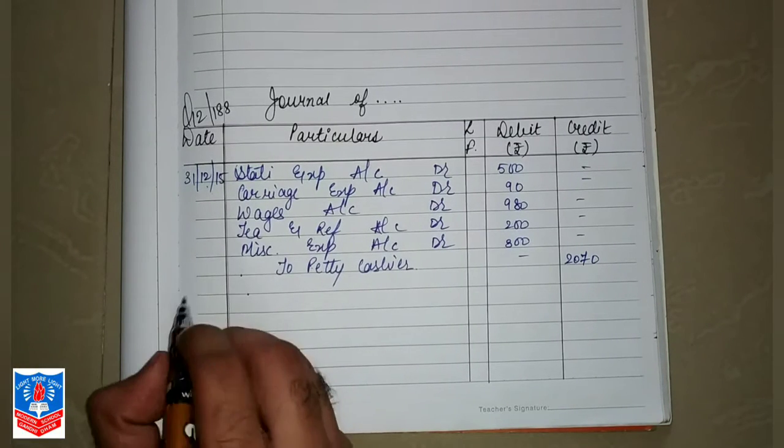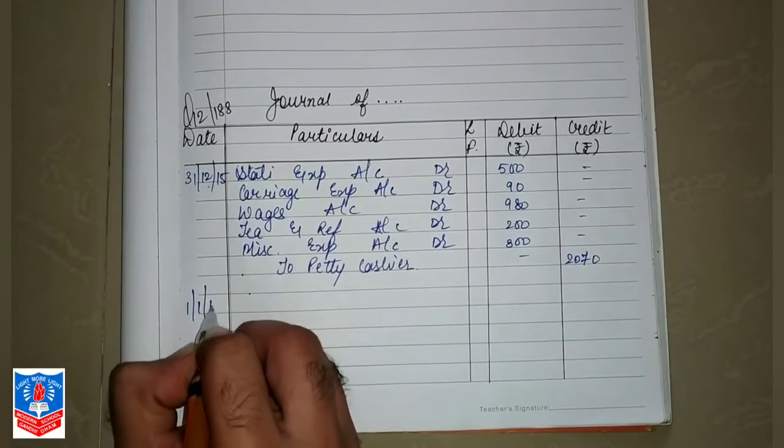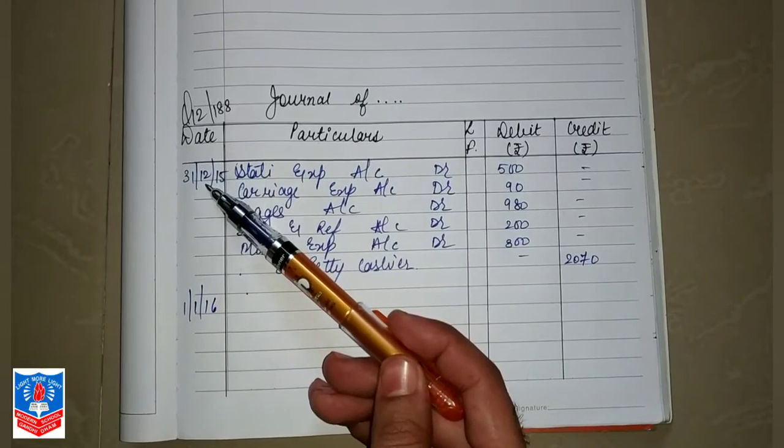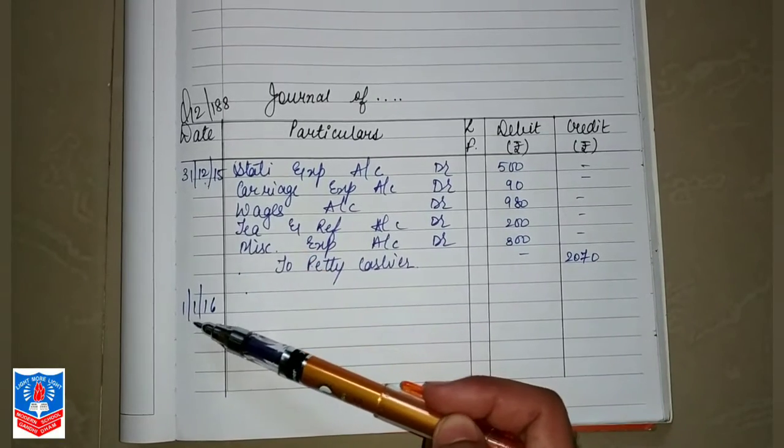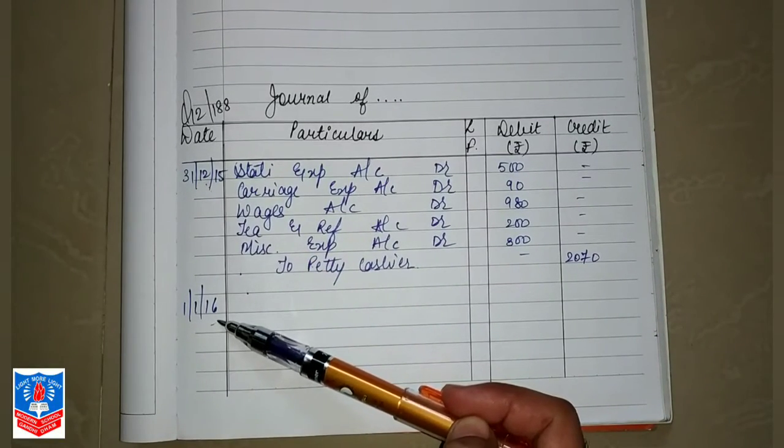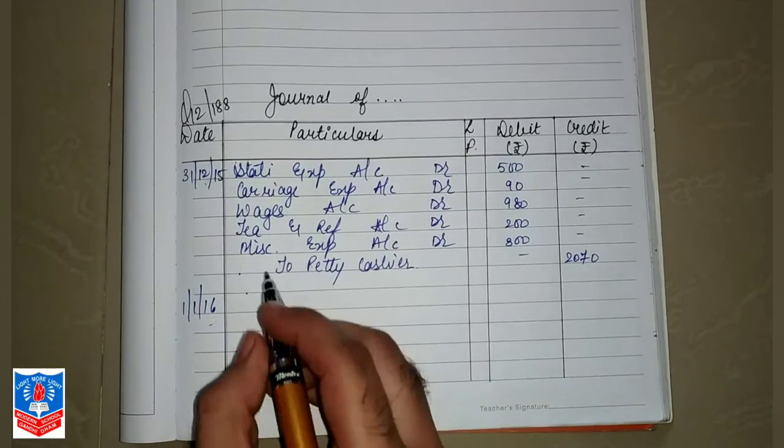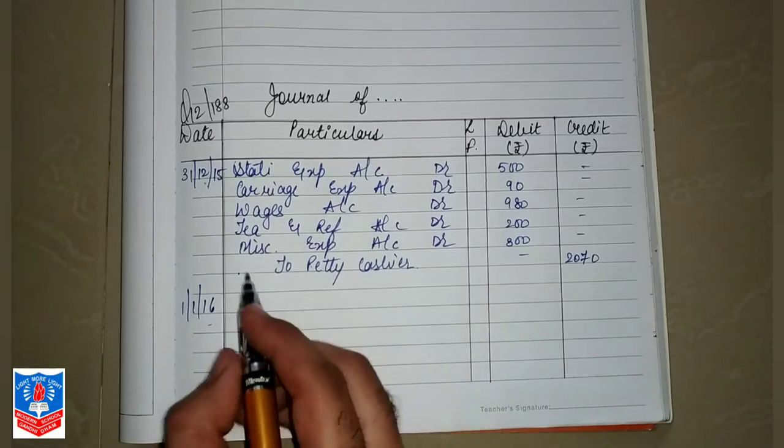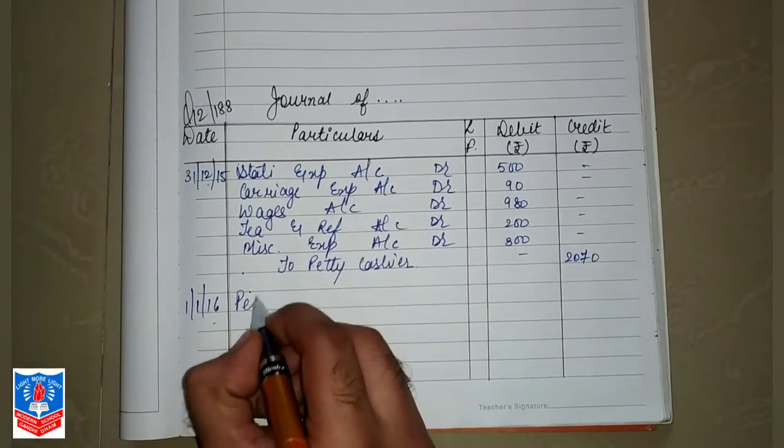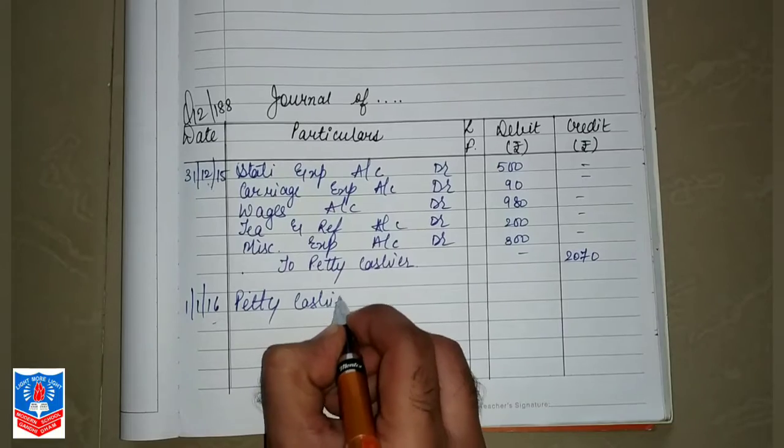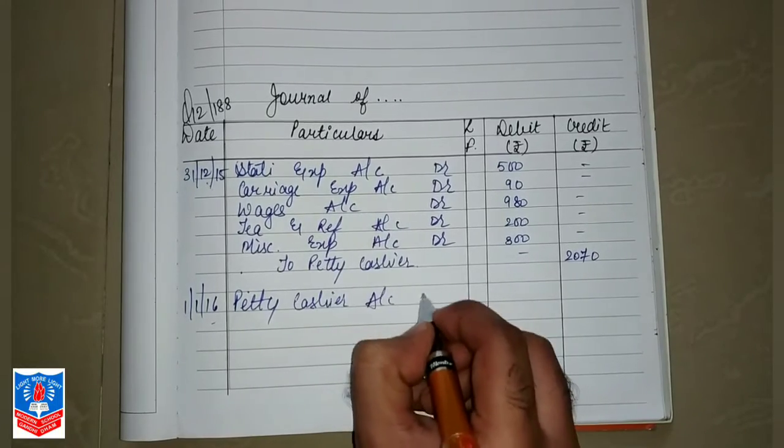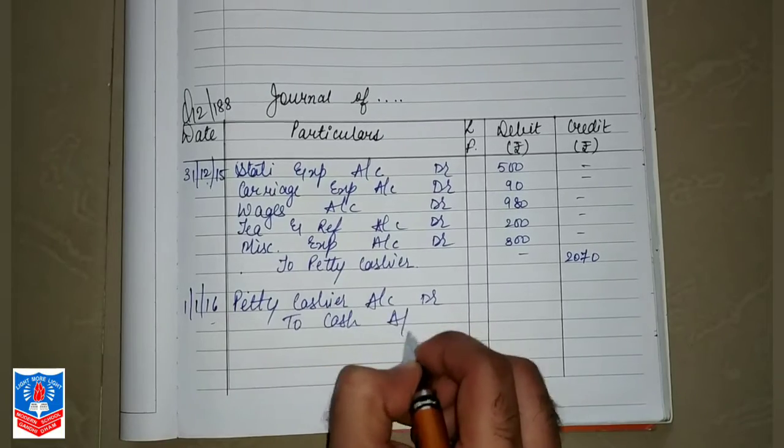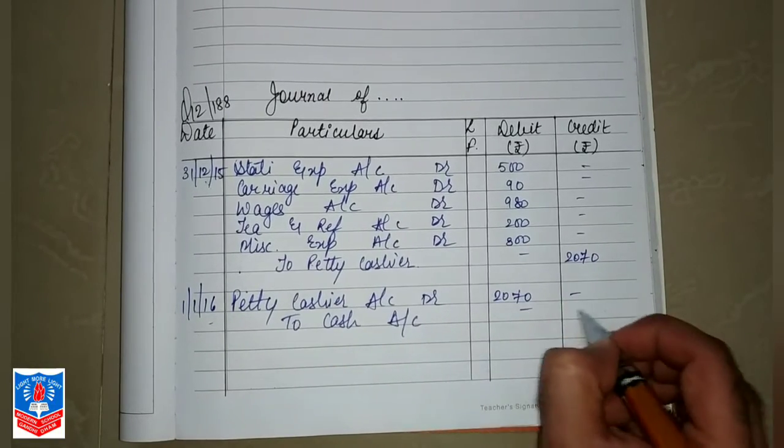Next day, that is 1-1-16, change ho jayega. 12th month, that is December, will become January. January will be 2016. Now what will happen? Petty cashier will receive this entire amount which is 2070. So petty cashier account debit to cash account 2070.